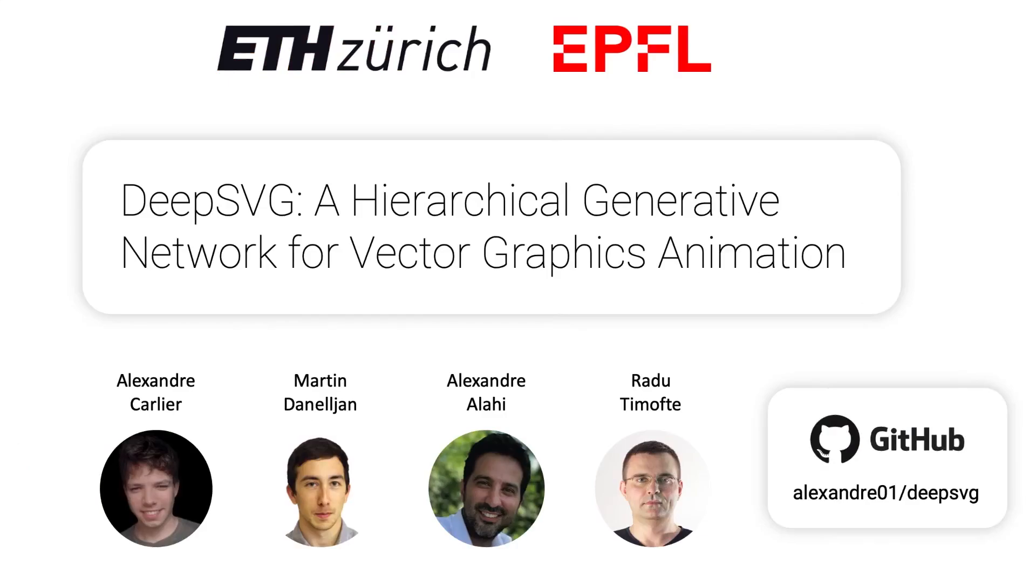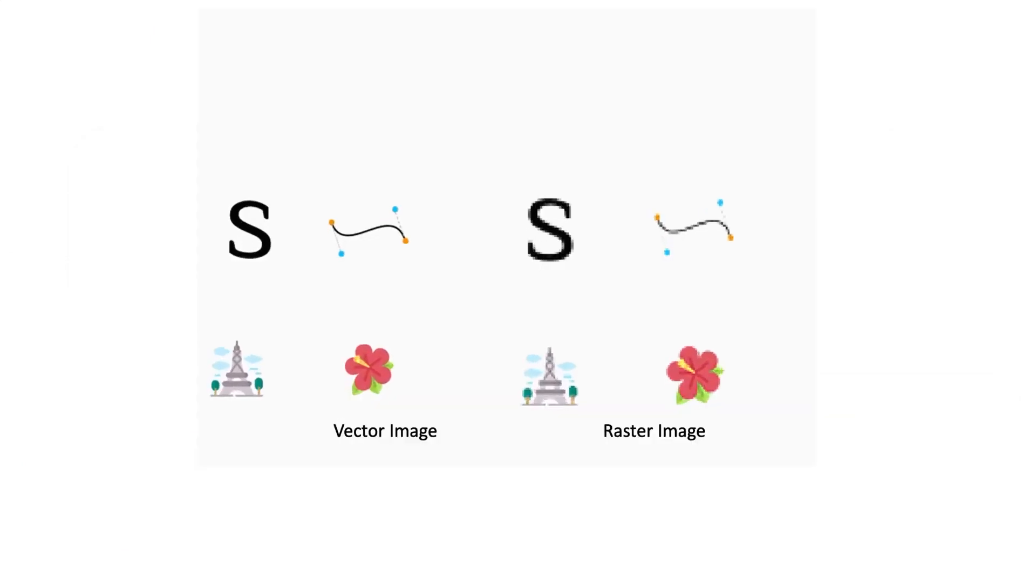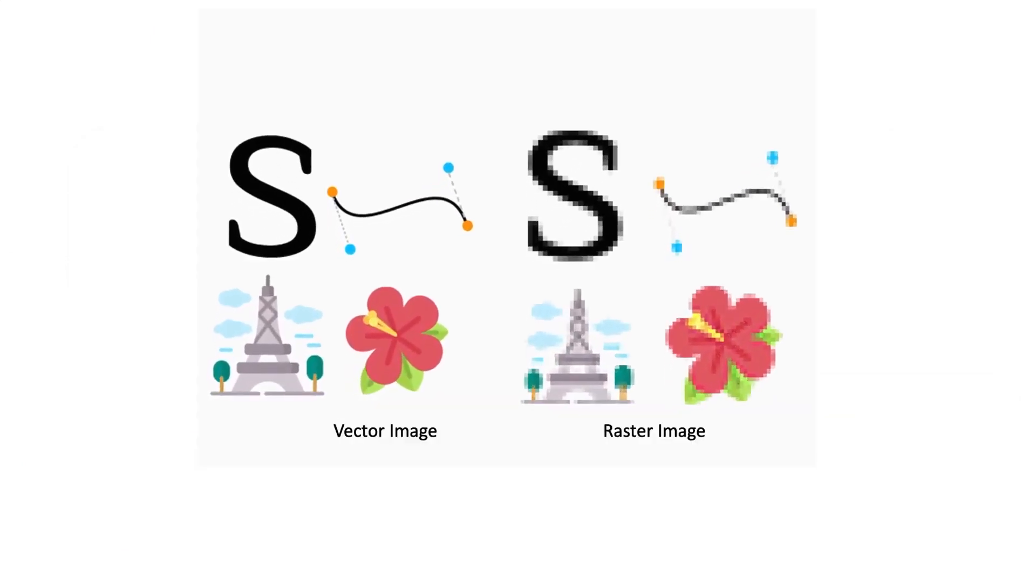In this video, we're presenting DeepSVG, a generative network for images in vector graphics format. An SVG image is defined using a set of shapes, curves, and lines, as opposed to raster images, which are drawn on a grid of pixels.